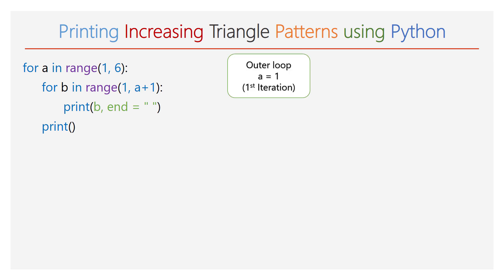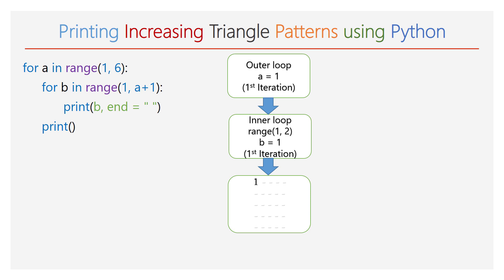Step by step, we will see what values of a and b hold during each iteration and what the output will be. During the first iteration, the value of a will be 1. The range of b will be 1 to 2, so the inner for loop will iterate only once. In the print function we use variable b — the value of b is 1, so number 1 will be printed in the output. Next, the empty print function is executed and the cursor will move to a new line.